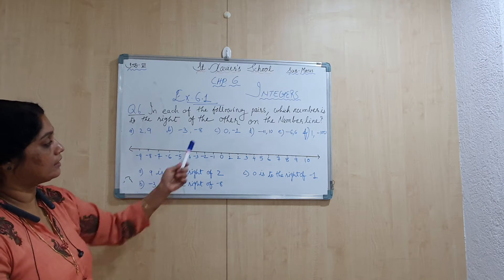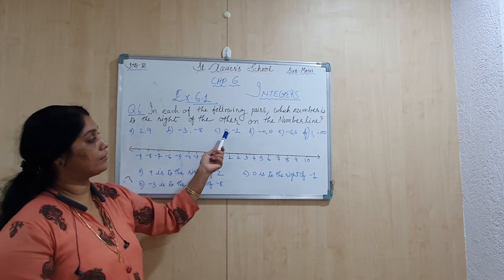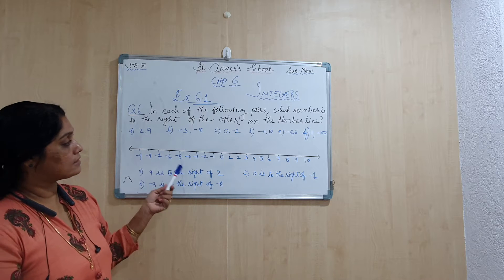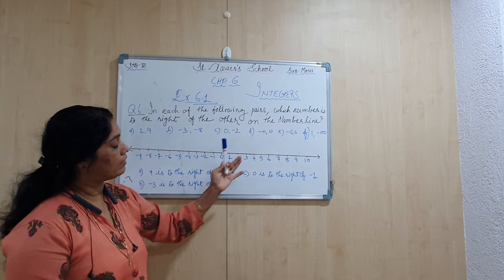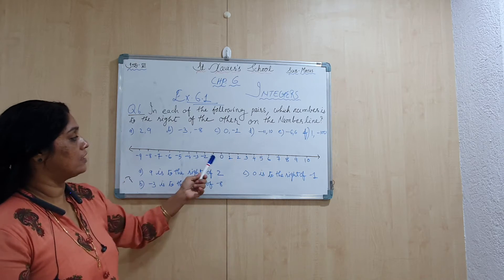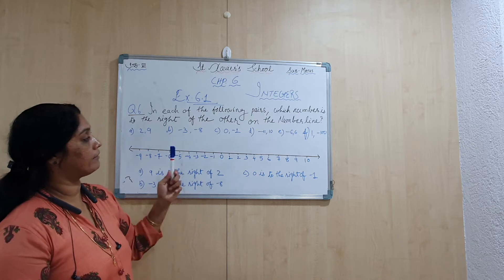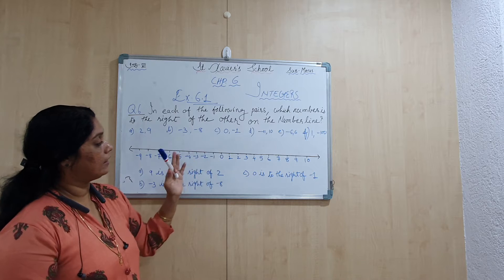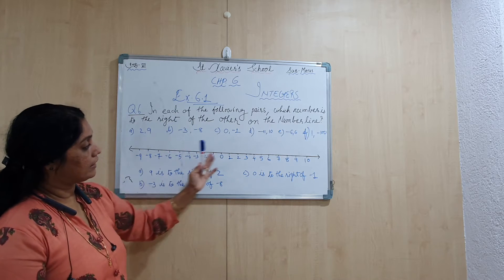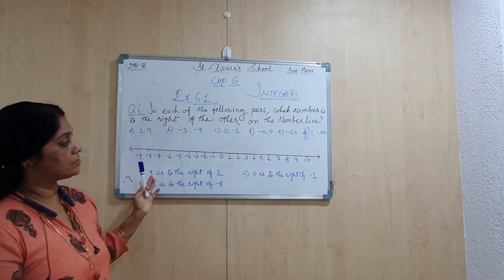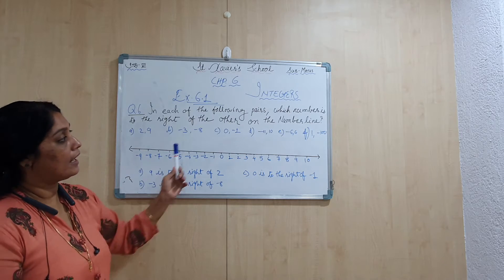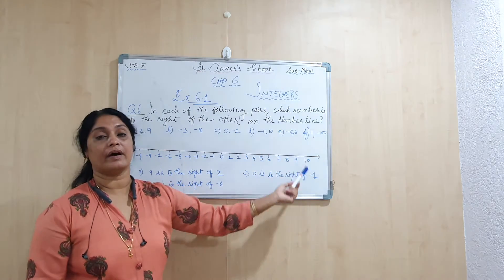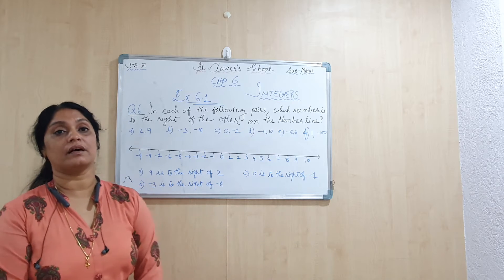Now let's see part C: 0 and minus 1. Zero is to the right of minus 1. Try to understand this with the help of the number line. The remaining parts — D, E, and F — I am giving as homework.